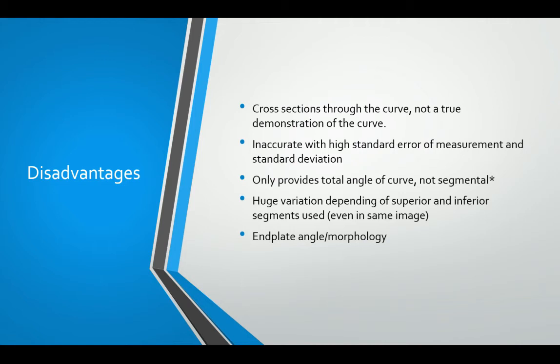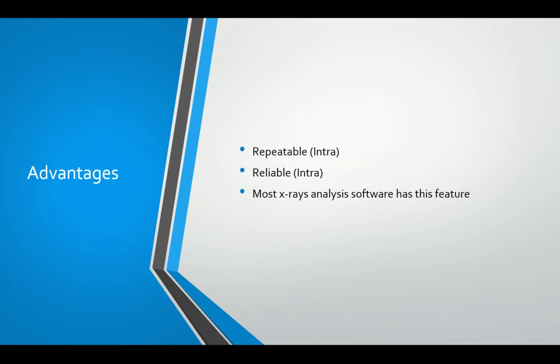The advantages of using the four-line Cobb angle method are that it does have high intra-examiner repeatability and reliability. The same examiner using this method will get repeatable and reliable outcomes. It is repeatable and reliable, especially for intra-examiner reliability measurements. Also, most x-ray software analysis programs have it as a standardised feature, so in terms of ease of access it is very easy for people to use the four-line Cobb angle method.